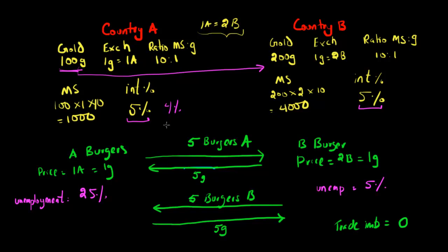The second thing the government could try is changing the ratio of money supply to gold — currently 10 to 1. They could say that in the future it's going to be 20 to 1, which would mean they could increase the money supply to 2000.